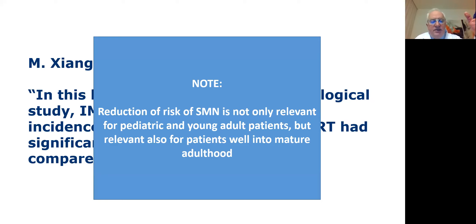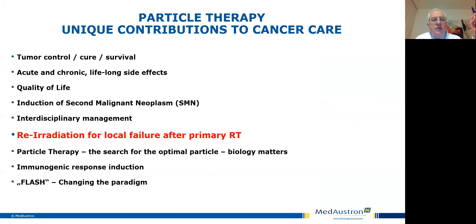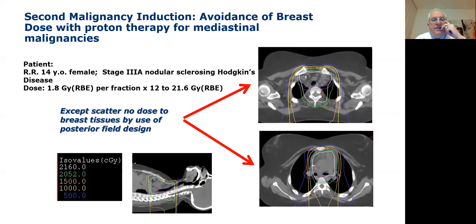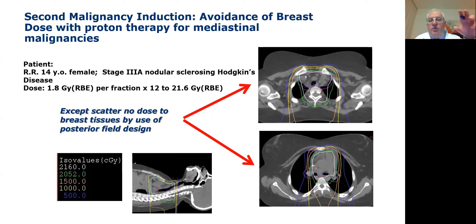The conclusion of this publication was that protons can significantly reduce second cancers compared to IMRT by about 50 to 70%. Here is an actual example — a 14-year-old with Hodgkin's disease. The mediastinum needs to be treated where the Hodgkin's disease and residual tumor was, but we wanted to avoid the breast tissue in order to avoid a significantly increased risk of breast cancer later in life. Coming in from a posterior approach, you can actually successfully accomplish this.